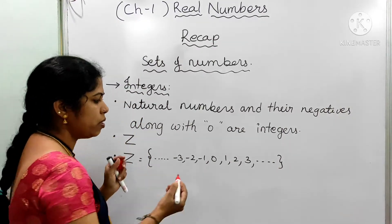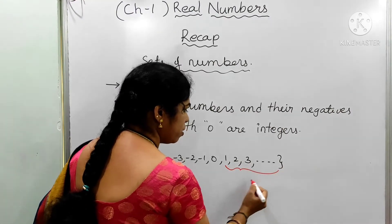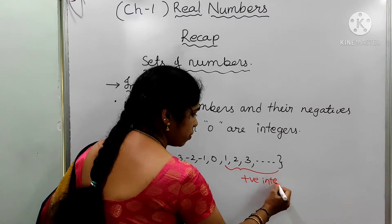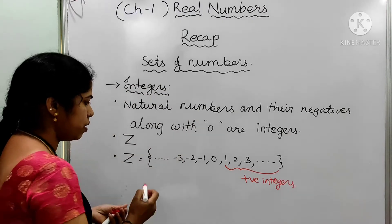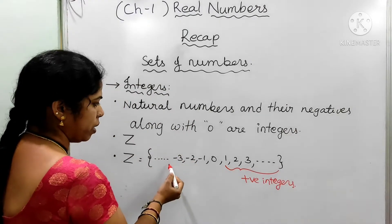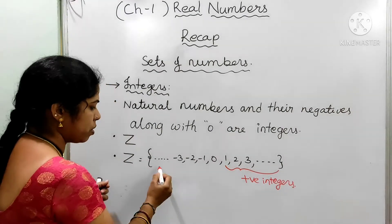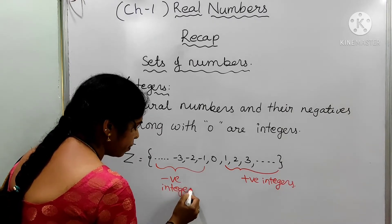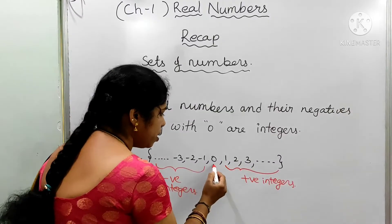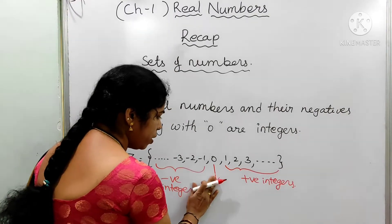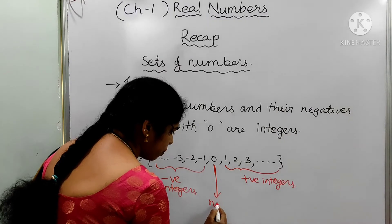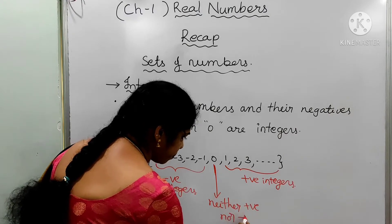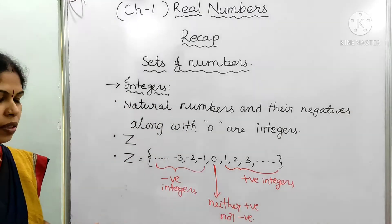In this set of numbers, 1, 2, 3, ... are actually natural numbers — these are positive integers. And -1, -2, -3, the negatives of natural numbers, are negative integers. What about 0? Zero is neutral, that means 0 is neither positive nor negative. So, this is the set of integers.